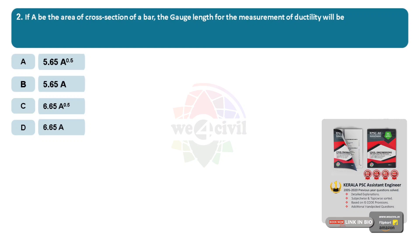If A be the cross-section area of a bar, the gauge length for the measurement of ductility will be? Option A, 5.65 root A. Option B, 5.65 A. Option C, 6.65 root A. Option D, 6.65 A. Answer: 5.65 root A.